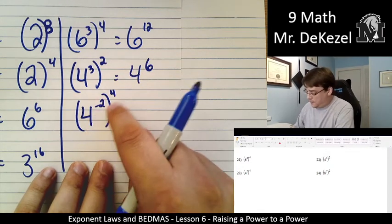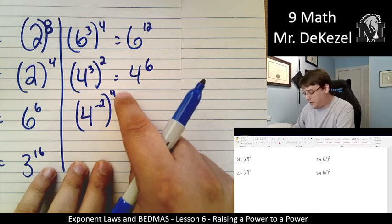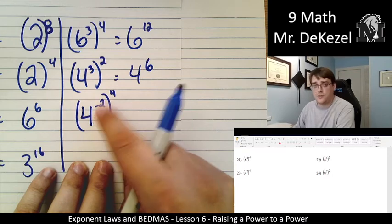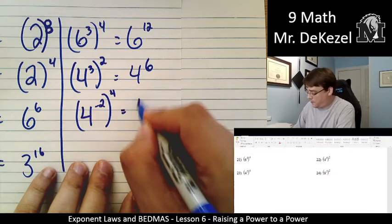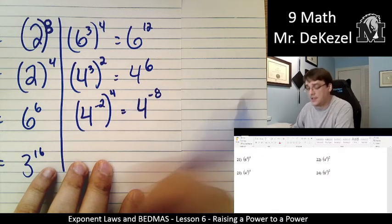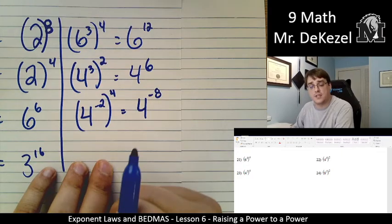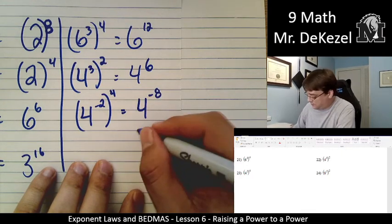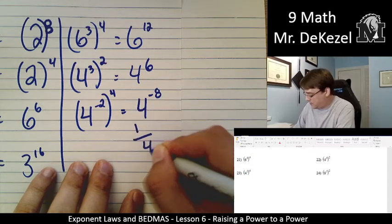If we have a power of a power, we still just multiply. So 4 is our base. Negative 2 times 4 is negative 8. So that's 4 to the power of negative 8. But we cannot have negative exponents in our answer, as you know. So we are going to take and flip that over. 1 over 4 to the power of 8.